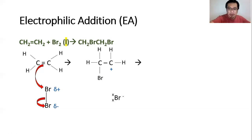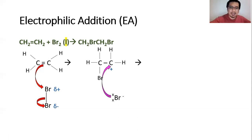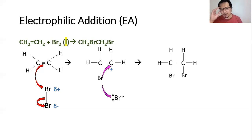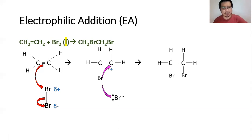To complete the reaction, the bromine ion from before attacks the carbocation. As a result, you get the product 1,2-dibromoethane. That's the electrophilic addition reaction mechanism of alkenes with steam and with bromine.